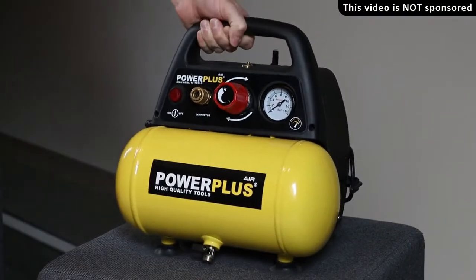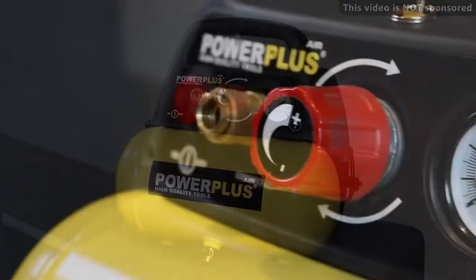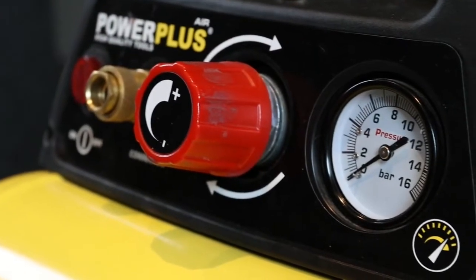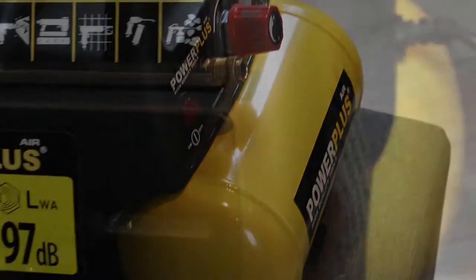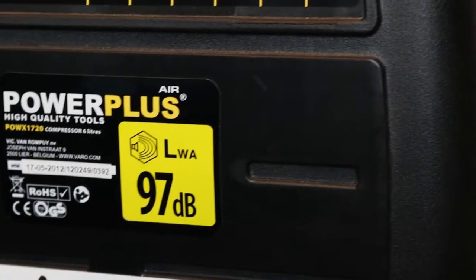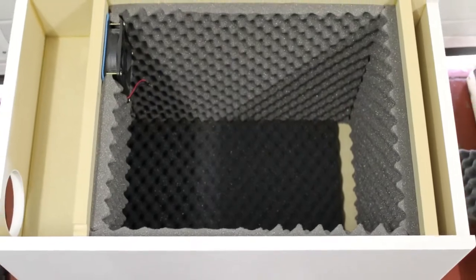As you can see I'm using a rather large compressor for airbrushing scale models. It's one of those typical hardware store models which I bought about 10 years ago. It has a 6 liter tank and is loud as hell. So back in the days I had to make a sound reduction box for it.